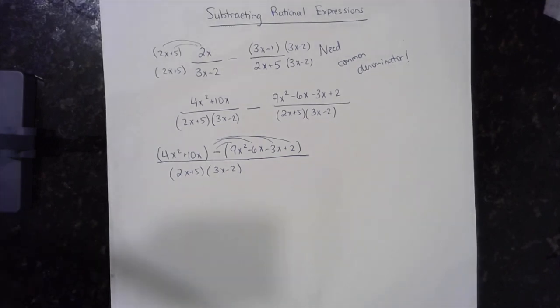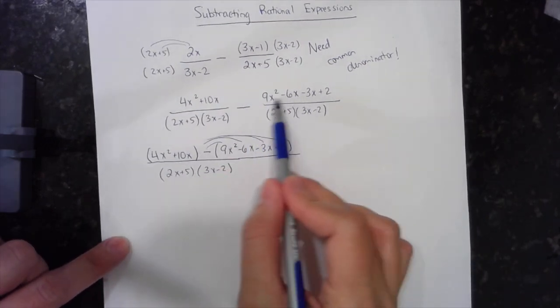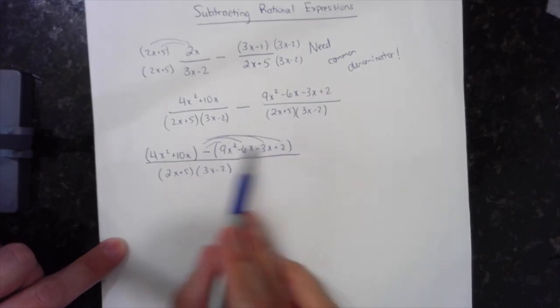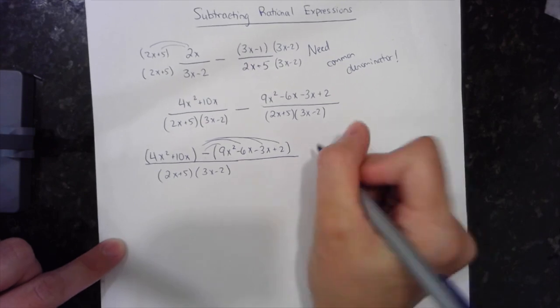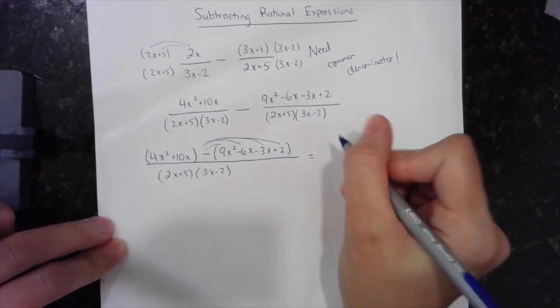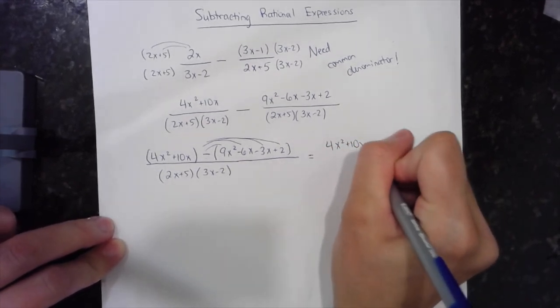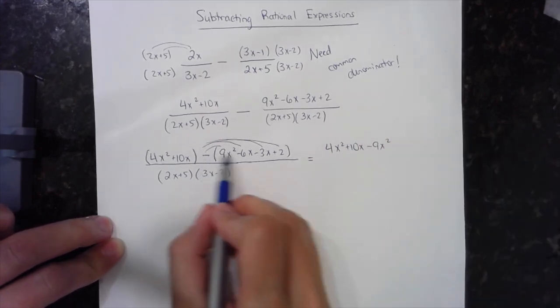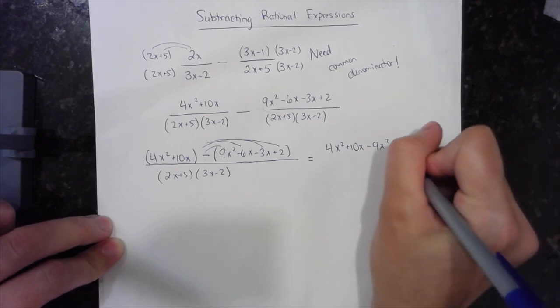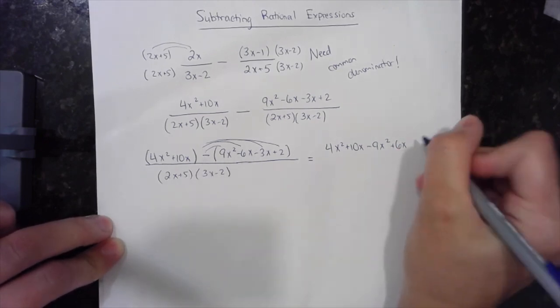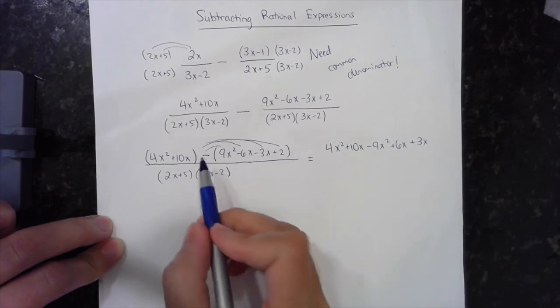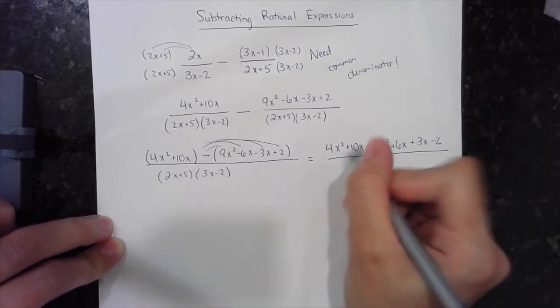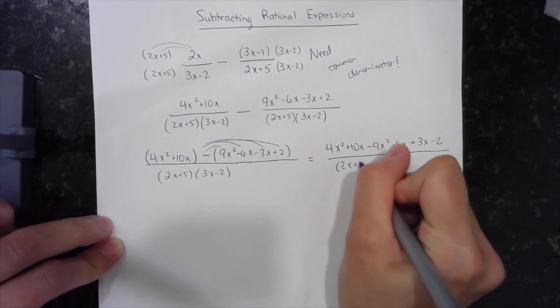So remember that when you're subtracting rational expressions, if you're subtracting this whole numerator, that negative, that minus is distributing to every term there. So really what happens when I take down the parentheses is I have a 4x squared plus a 10x minus a 9x squared minus minus 6x plus 6x minus minus 3x plus 3x and then a minus that 2 all over. Denominator still stays the same.